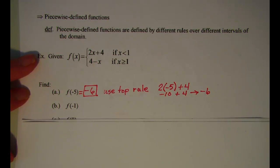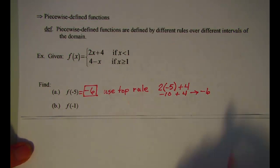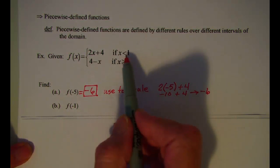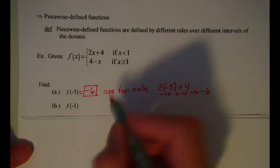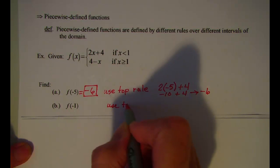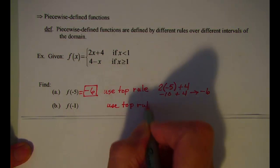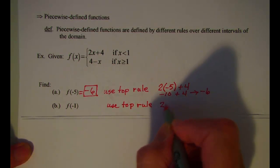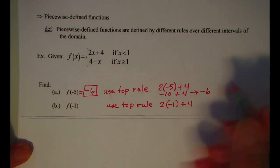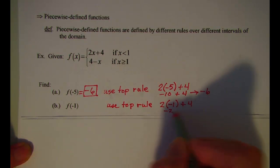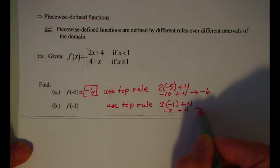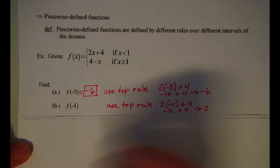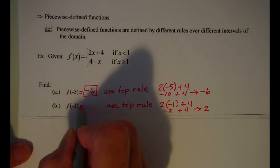If I were asked to find f of negative 1, again negative 1 is to the left of positive 1, so I'm going to use the top rule. I would have 2 times negative 1 plus 4. This is negative 2 plus 4, so 2. f of negative 1 equals 2.